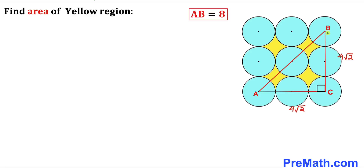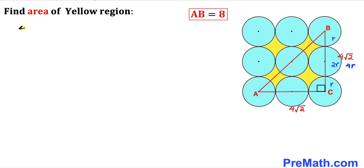Now let's make an observation. This is the radius of the blue circle — let me represent it by lowercase r. Then the diameter is 2r, and there is a radius r on each end. So the total length BC is r plus 2r plus r, which equals 4r. Therefore 4r equals 4√2. Dividing both sides by 4, our radius r turns out to be √2.